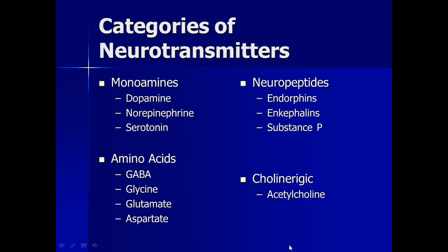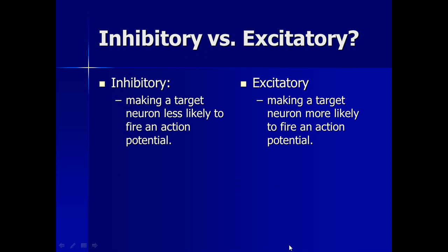There are many different categories of neurotransmitters. In psych, we are only concerned with the ones on this slide: the monoamines, the amino acids, the neuropeptides, and the cholinergic neurotransmitters, which would be acetylcholine. For our brain to work properly, it is important that we maintain a correct balance of these neurotransmitters. Neurotransmitters can be inhibitory and excitatory, and some can be a little of both, which you will be learning more about in your readings.